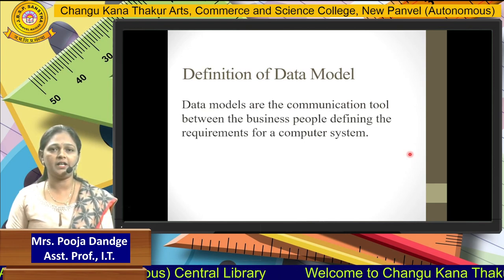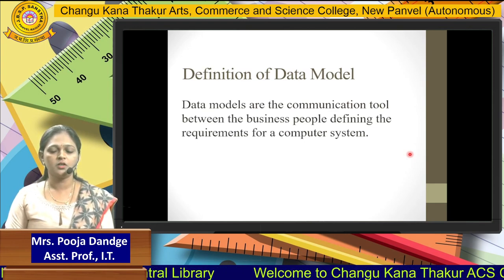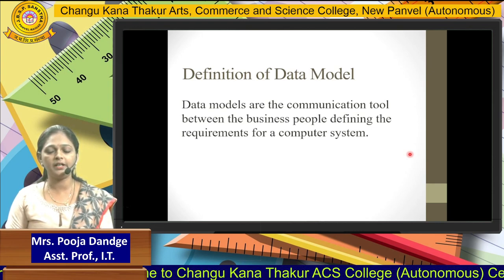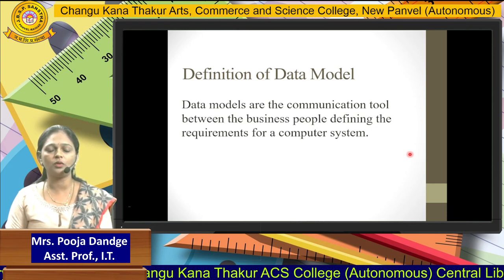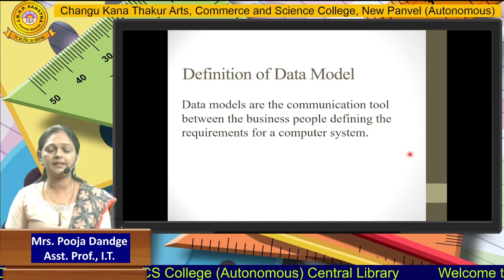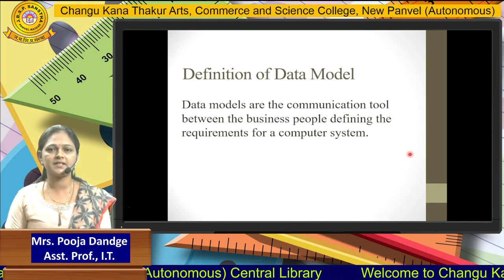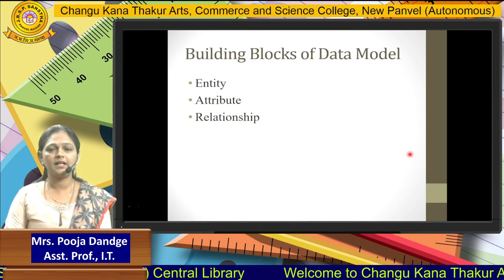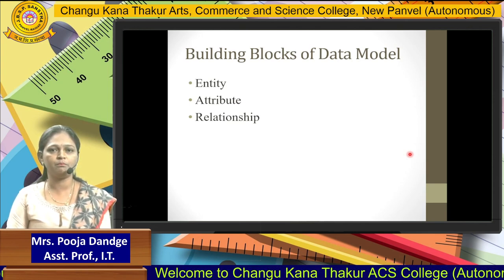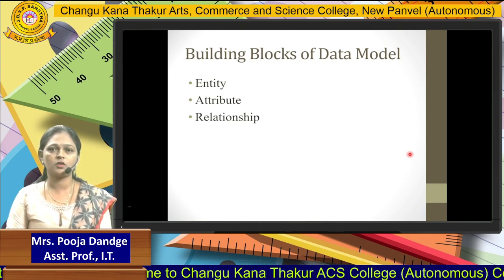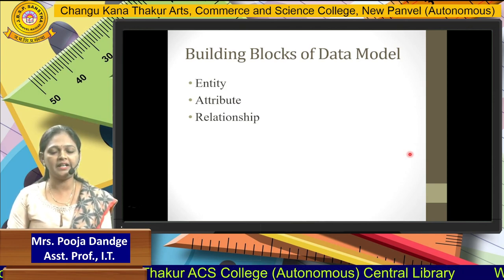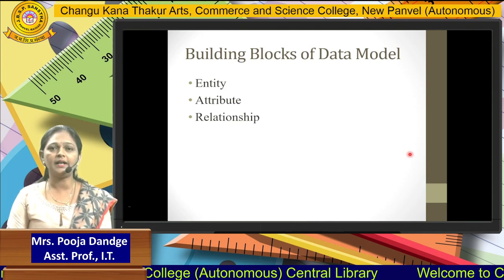Data model means what? Data models are one type of communication tool which handle and maintain the relationship between business people and their defining requirements — that is known as the data model. There are three main blocks on the basis of which the data model handles its whole working. The first block is the entity, second is the attribute, and third is the relationship.